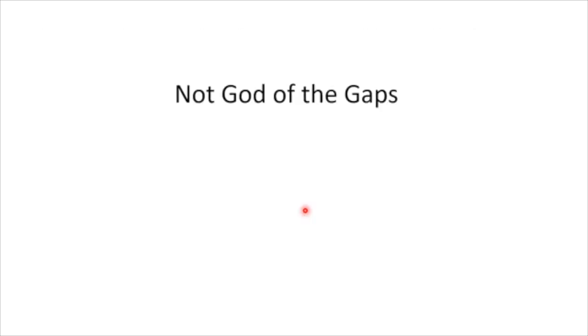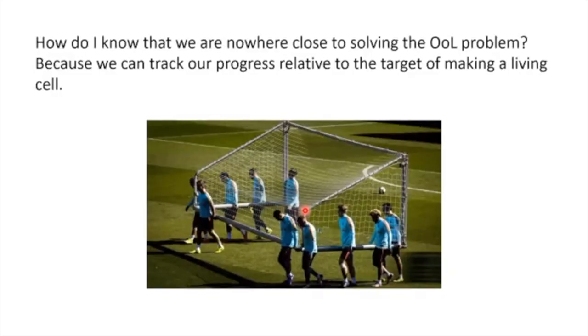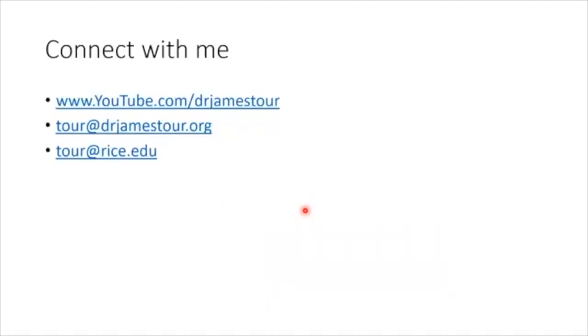I have not talked at all about God of the gaps. When people make that accusation, they're just changing the argument — they want to attack me as an individual because they cannot address the science. Address the science. As a scientist, I would never say we will never understand. One day in the distant future I presume we will understand life's origin. But for now, we are nowhere close. How do I know? Because of the moving goalposts — every year we find out the cell is more complex than the year before. We didn't know about chiral-induced spin selectivity, or interactomes and the 10^79 billion, and that's just protein-protein interactions — you've also got protein-DNA, protein-RNA, and DNA-RNA interactions. The target keeps getting further away. Therefore, scientists remain clueless on life's origin, and current scientific models for the emergence of life are nonsensical.